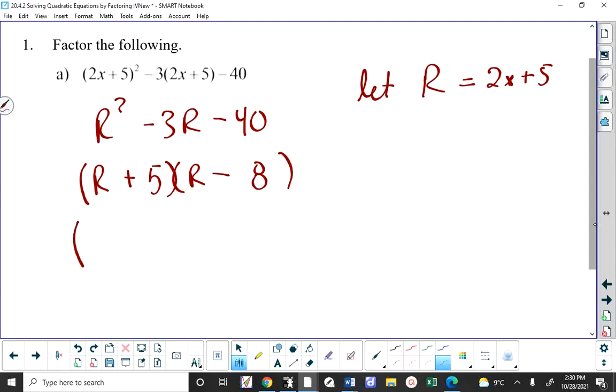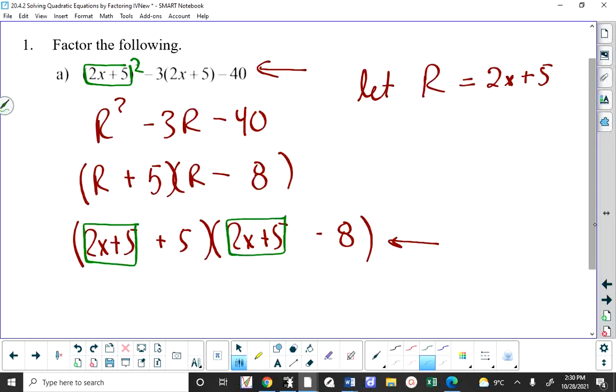So now we have 2x plus 5 plus 5 and 2x plus 5 minus 8. Before we go on, how many of you would have been able to structure those factors this way just by looking up here? And it's not going to be too many yet. But the next time I ask that, I'm hoping it's a few more. The idea is you have this thing squared, so you need to have it here and here.